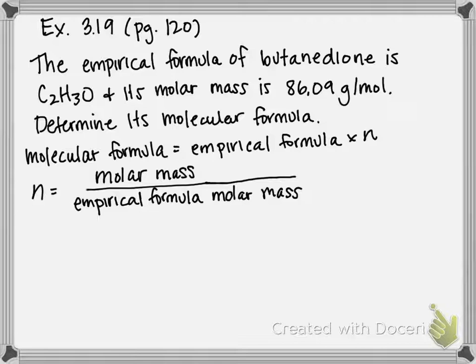This problem states that the empirical formula of butanedione is C2H3O. So it gives us its empirical formula. Its molar mass is 86.09 grams per mole. Using those two pieces of information, we need to determine its molecular formula.